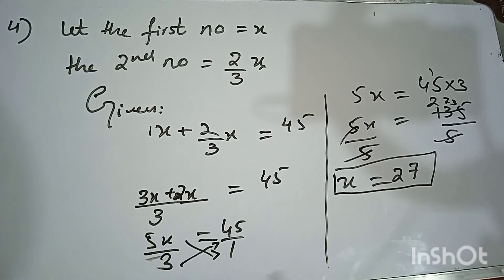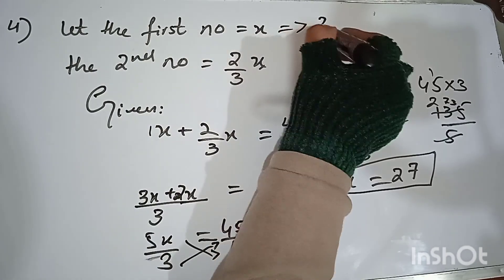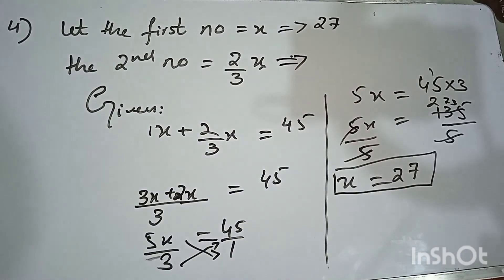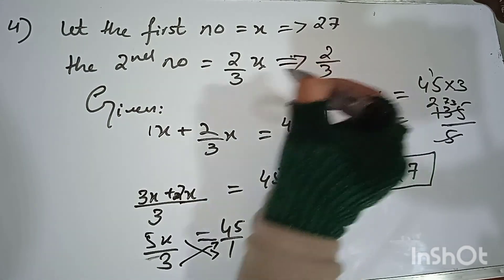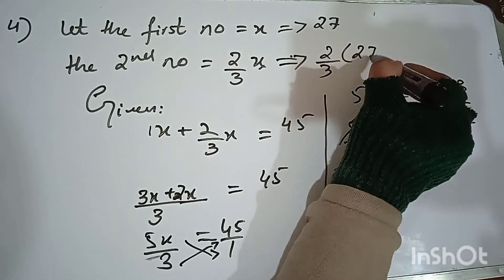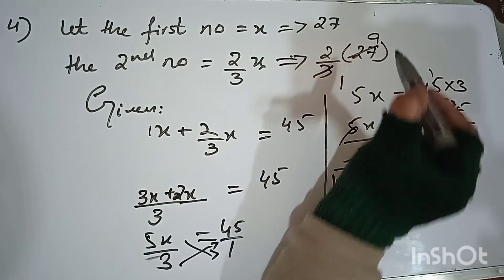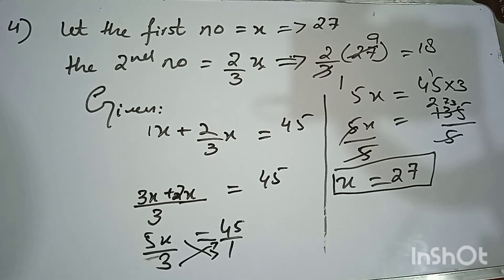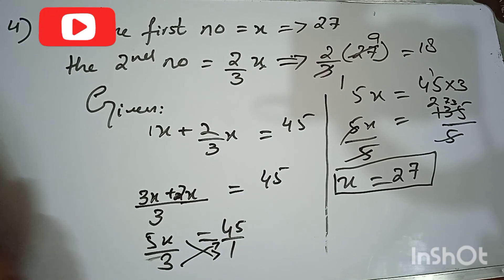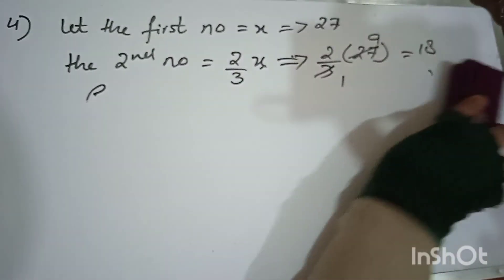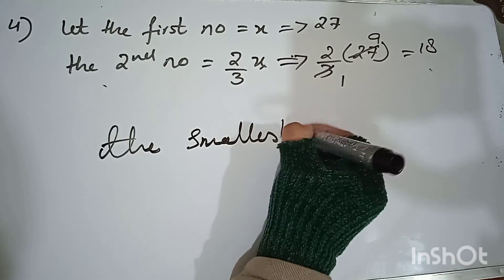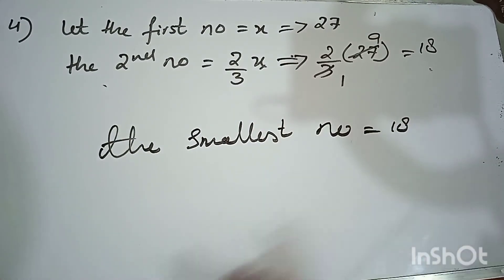The first number x is 27. The second number is (2/3) × 27. Since 3 × 9 = 27, we get 2 × 9 = 18. So the first number is 27 and the second number is 18. The smaller number is 18.